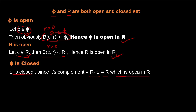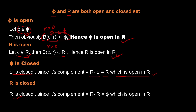In the same way, we'll show that ℝ is also a closed set. ℝ is a closed set because its complement — that is, ℝ minus ℝ — is the empty set φ. We have already shown that φ is open in ℝ. So the complement of ℝ is open in ℝ, and therefore we can say that ℝ is a closed set. In this way, we have shown that φ and ℝ are both open and closed.